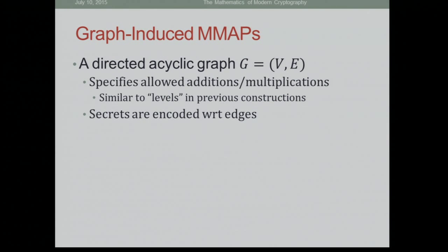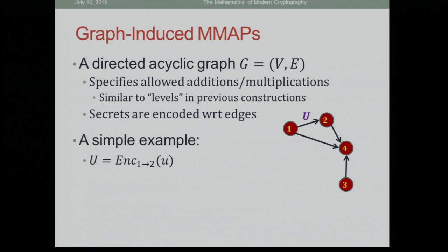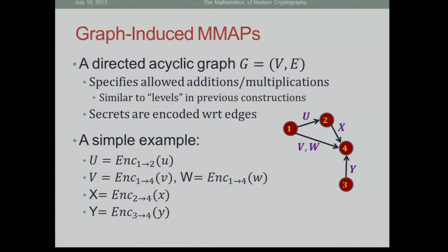What is a graph-induced multilinear map? Every instance of this construction comes with a graph, and the graph tells you which operations on encoded values are valid. It's similar to the levels in the other constructions. You have a graph, and plaintext elements are encoded relative to edges in this graph. Here's a simple example: a graph with four vertices and four edges. A plaintext value lowercase u is encoded relative to the edge from 1 to 2, giving you the encoded value capital U, and similarly for other plaintext values on other edges.